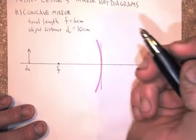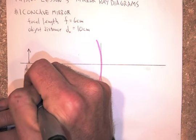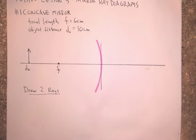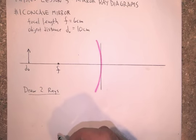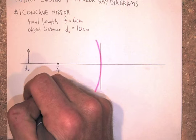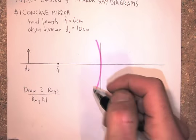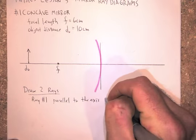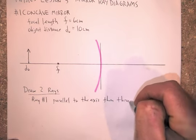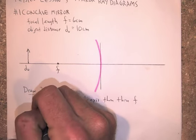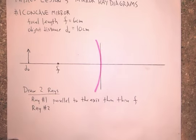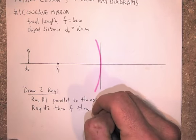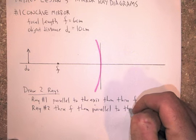You're going to have to draw two principal rays. Here's the rules for the rays. And it's basically the same rules all the time. Ray number 1. We're going to say it goes parallel to the axis. Then through F. Ray number 2. Kind of does the opposite. It goes through F. Then parallel to the axis.